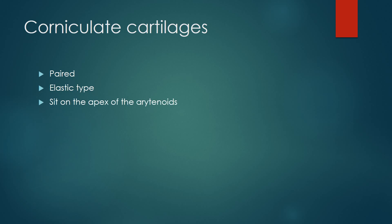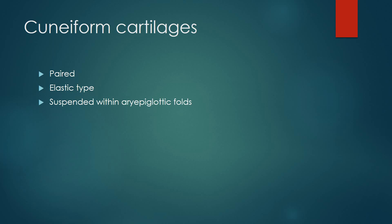The corniculate cartilages are paired elastic cartilages that sit on the apex of the arytenoids. The cuneiform cartilages are also paired elastic cartilages, and they are suspended within the aryepiglottic folds.